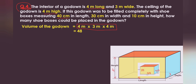Volume of the godown: length × width × height = 4 × 3 × 4 = 48 cubic meters.